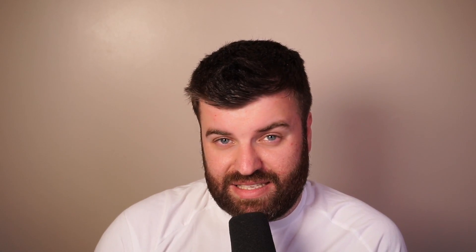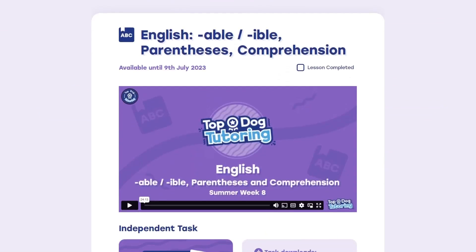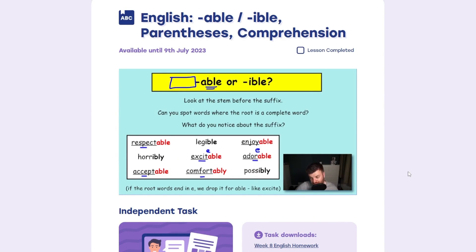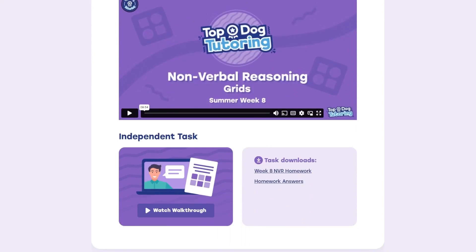Here at Top Dog, we provide you with videos on how to solve all different types of 11 plus questions from maths, English, verbal reasoning, non-verbal reasoning and spatial. You get a lot on our YouTube channel, but if you're serious about preparing for this test, why don't you head over to our website, topdogonline.co.uk, where you can access premium lessons at a bit of a discount.